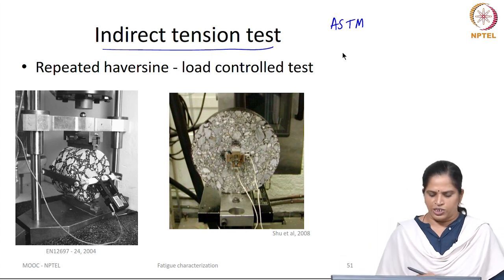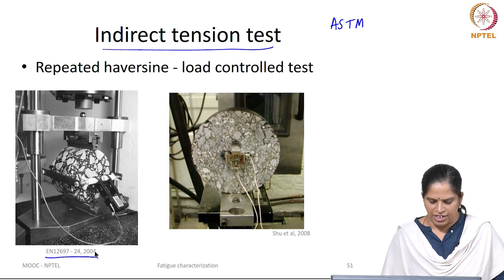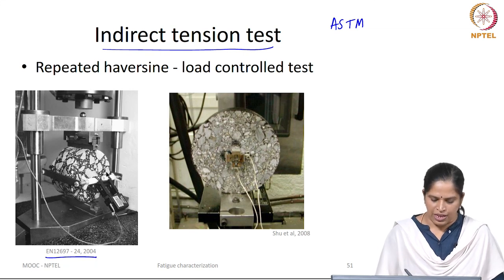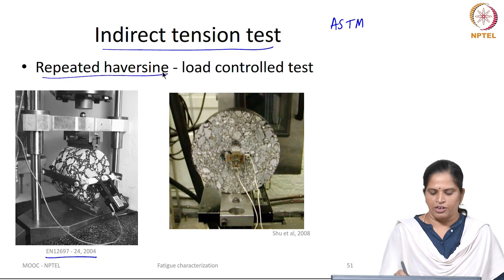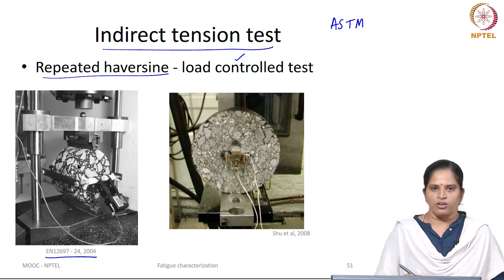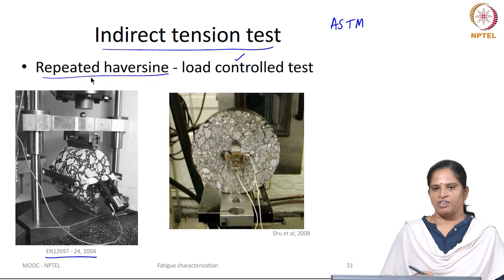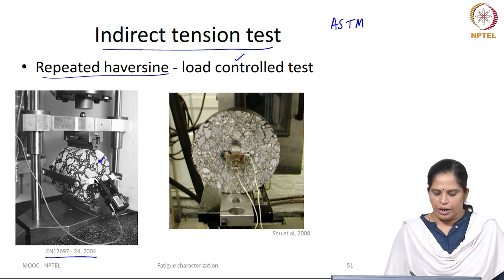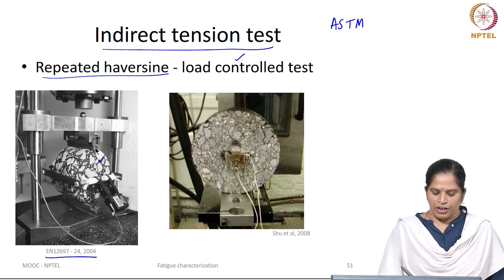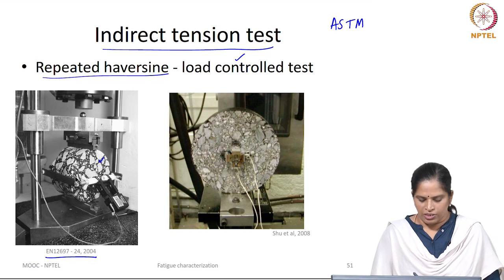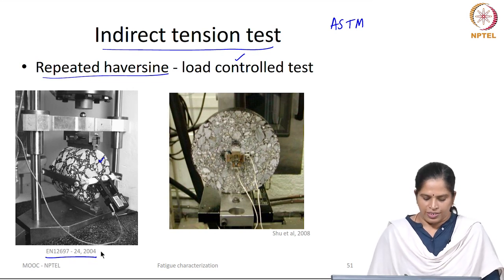In indirect tension testing, we have EN standard recommendations for conducting the test. The EN standard states that you prepare a bituminous sample subjected to repeated haversine loading in a load-controlled, that is stress-controlled way. You control the load in a haversine pattern and measure the deformation. You apply a load in a diametrical plane as shown in this picture and measure the horizontal deformations. The load applied is compressive in nature and you measure horizontal deformation along the horizontal plane. This is as per EN standard.